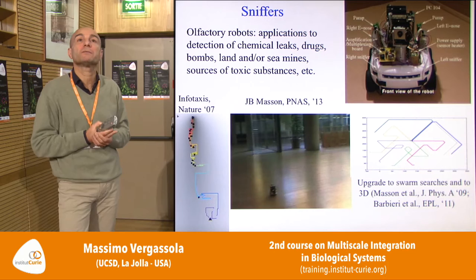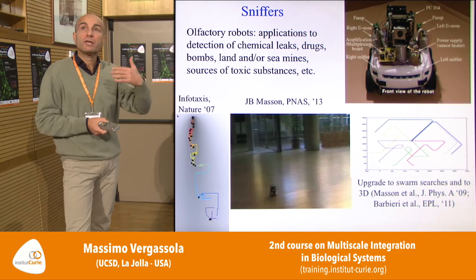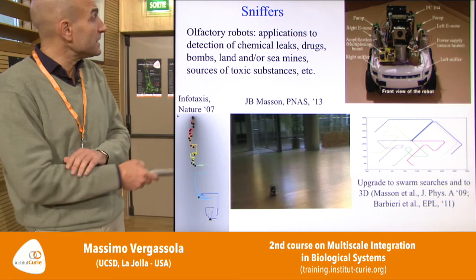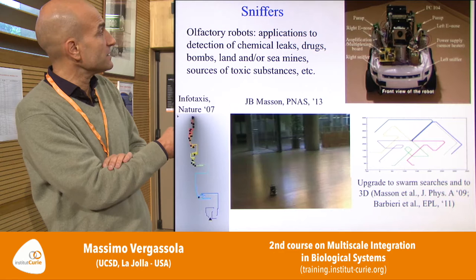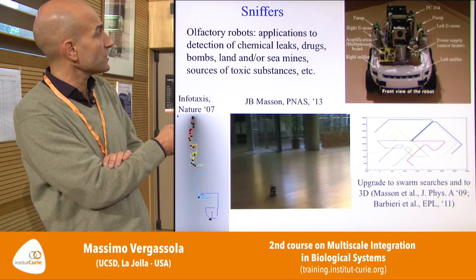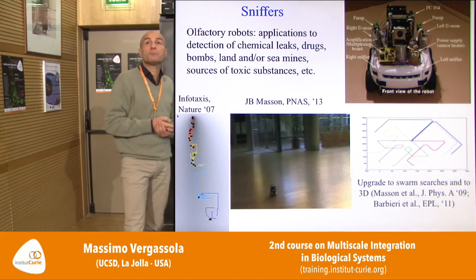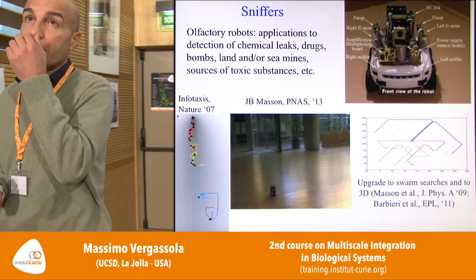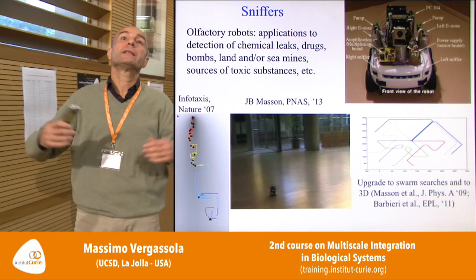A few years ago we posed this problem purely from a physical standpoint: build a robot able to start very large distances from a chemical source and navigate to it based on detections. The strategy we proposed is based on information theory — infotaxis. It builds a map of where the source might be located based on detections and non-detections, then moves to reduce Shannon entropy, acquiring information on the source location as fast as possible. This leads to patterns very reminiscent of the casting and zigzag behaviors seen in moths. This was done mostly in simulations, then Jean-Baptiste Masson at Pasteur implemented it on real robots, and later extended to swarms of robots communicating by Wi-Fi.